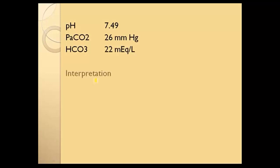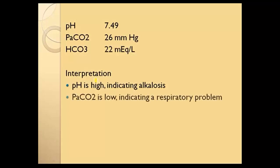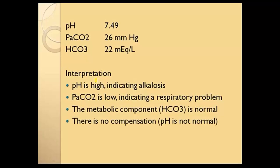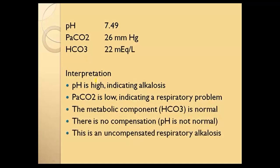Second one. If you use a systematic, consistent approach, this is going to start to get easier and easier. The pH is high — this indicates alkalosis. The PaCO2 is low — that tells us this is a respiratory problem. The metabolic component, the bicarb, is normal. There is no compensation because the pH is not normal. So this is uncompensated respiratory alkalosis.